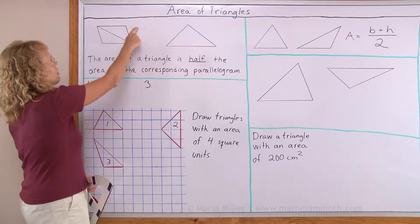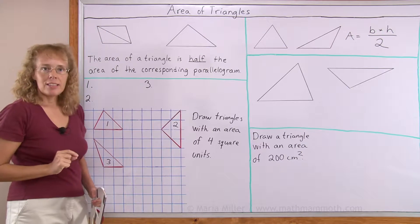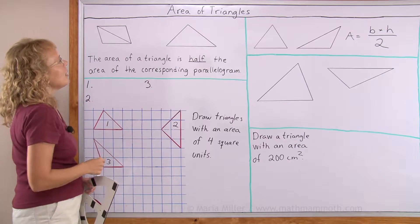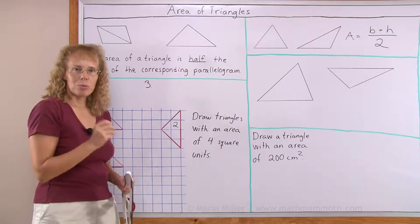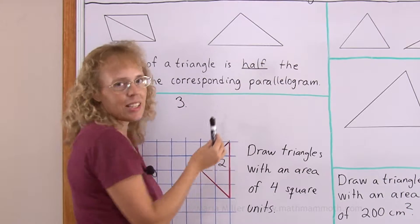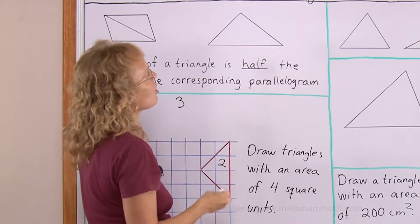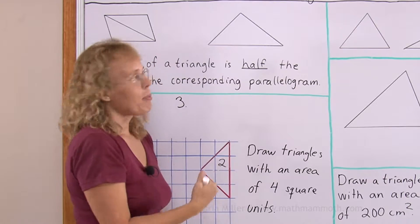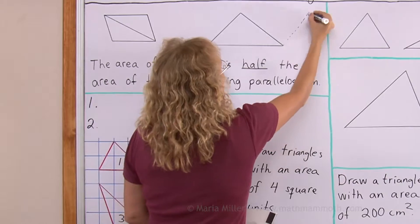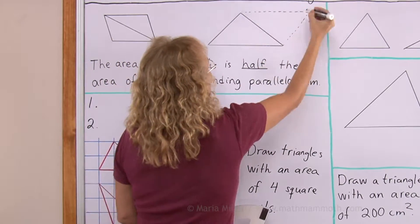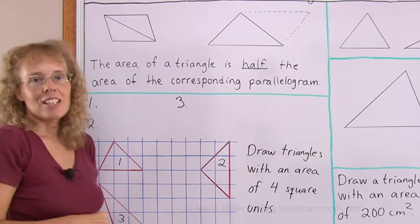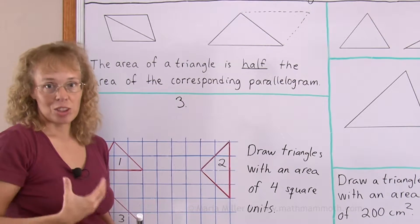If you have a parallelogram, you can divide it into two triangles by drawing in the diagonal. If you have a triangle, you can also draw in the corresponding parallelogram, where this side will end up being the diagonal of the parallelogram. There are actually two ways you can draw the parallelogram — I take this side and copy it here, and this side and copy it over here. Now you can see the outline of the corresponding parallelogram. Every triangle is always half of a certain parallelogram.